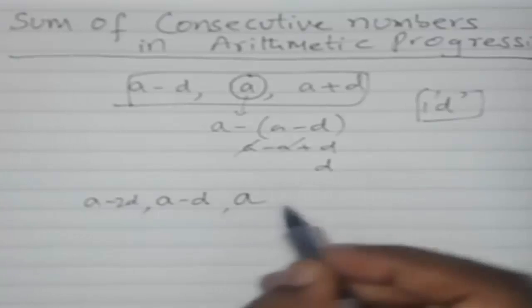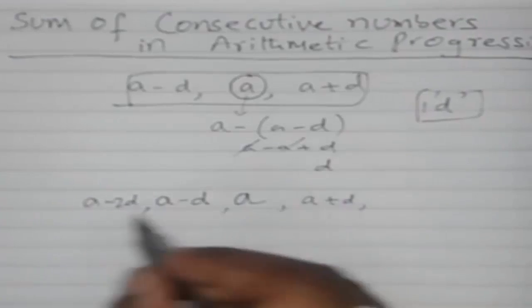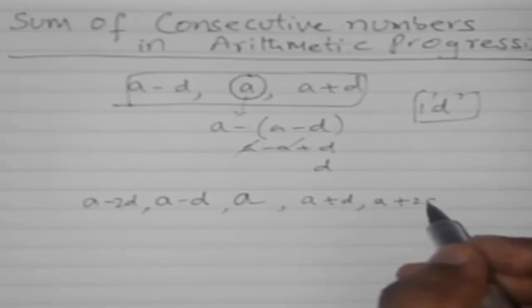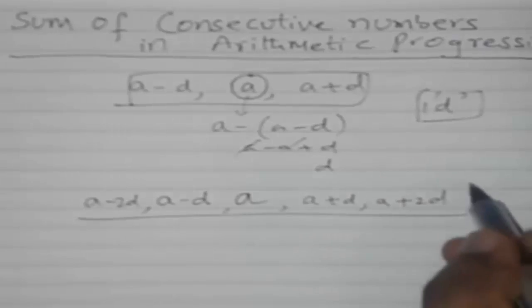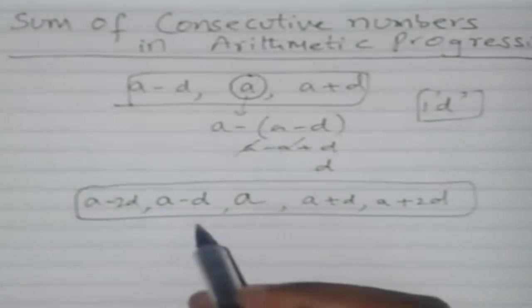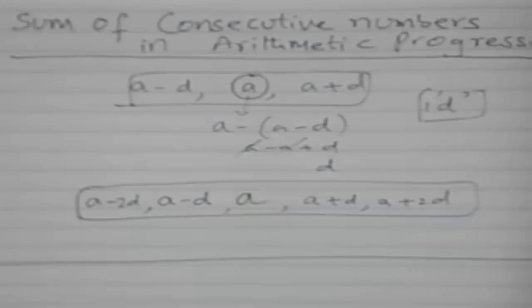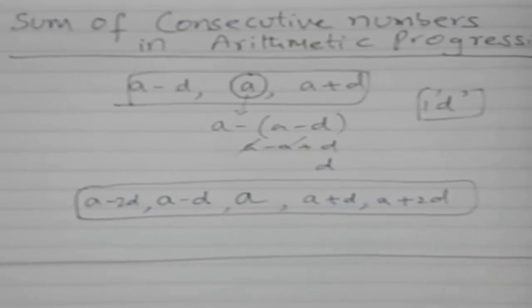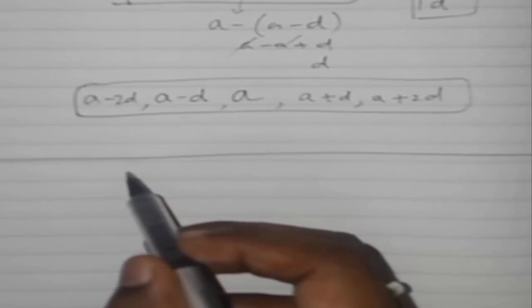It should be the same, just the thing is you have to add plus. So these are our sum of five terms of AP. Now, if they ask you for finding the four terms of AP in succession.